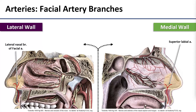The facial artery also sends a few branches into the nasal cavity by directing them up through the nostrils. The lateral nasal branch of the facial artery comes up the lateral side of the nostril, and the superior labial artery comes up the medial side.